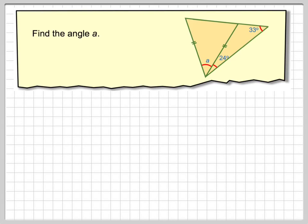Find the angle A. We've got this triangle here. Now these two lines here and these two lines here means that these two lengths are equal. Therefore this triangle is known to be isosceles.